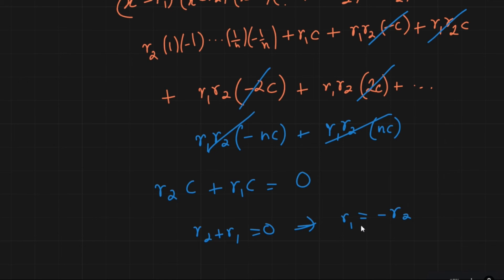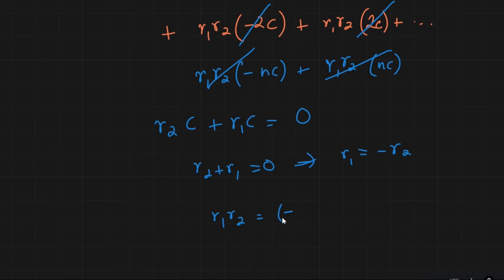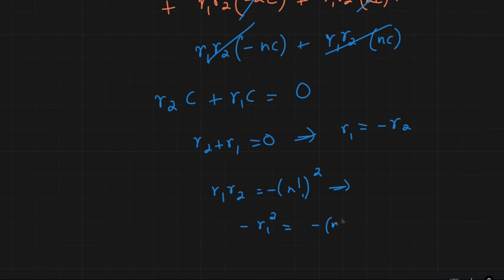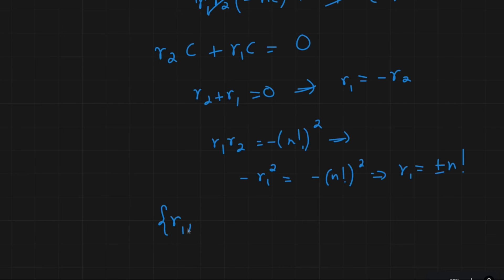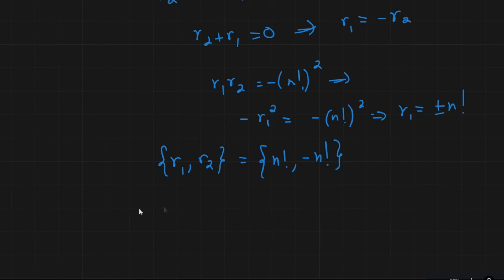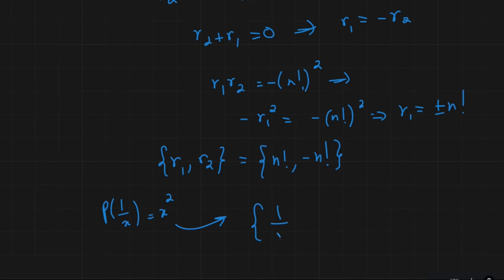Since r1 = -r2, and we know r1·r2 = -n!², we get -r1² = -n!², so r1 = ±n!. Thus the roots are r1 = n! and r2 = -n!. Since being a root of g corresponds to being the reciprocal of x satisfying the original identity, the other two values of x are 1/n! and -1/n!. And we're done.